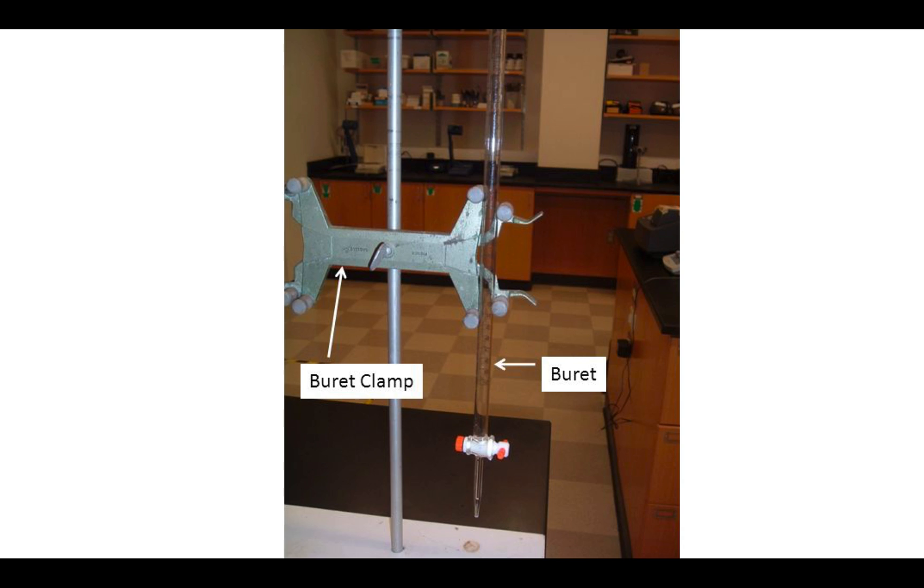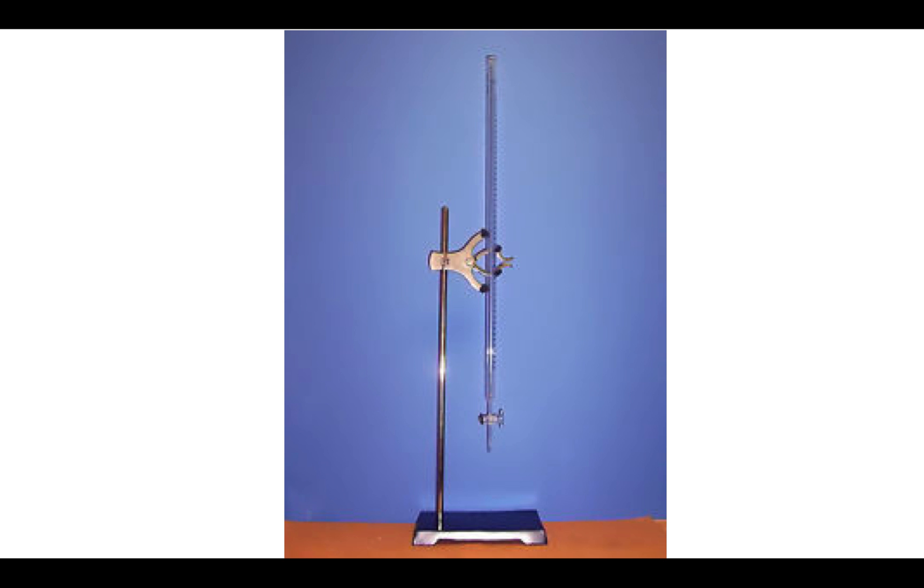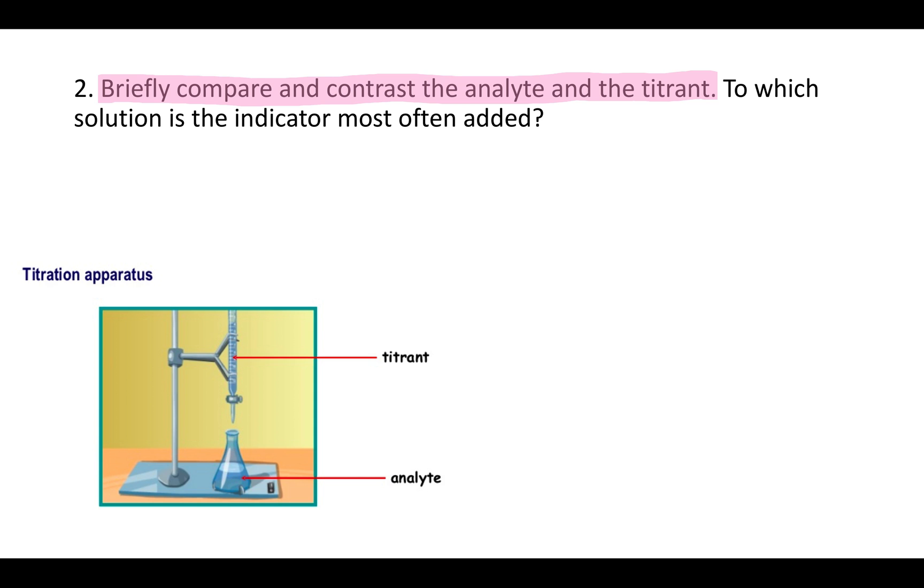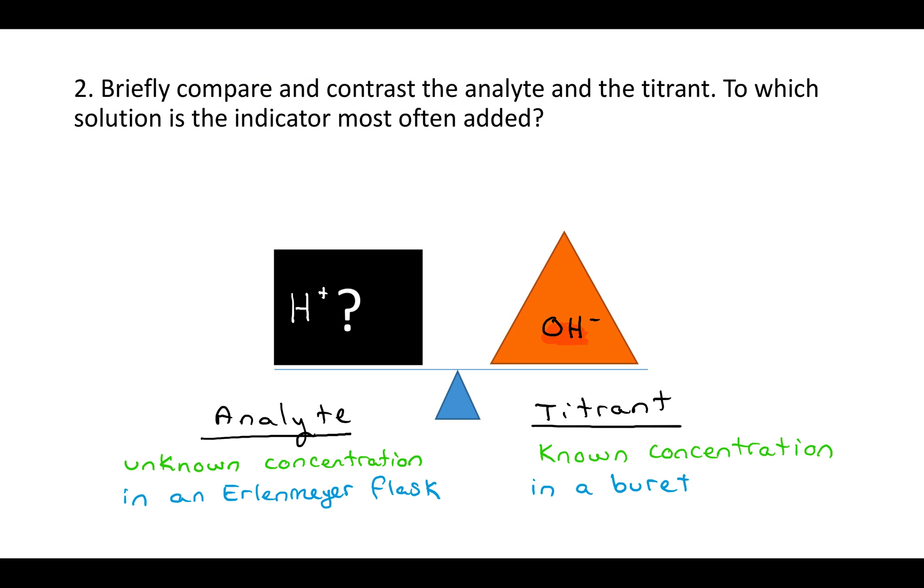You would keep this up with something called a burette clamp. Notice how it's going in between those two knobs. We'll use one of those in the lab. Here it is standing up. And so here you can see the titrant in the burette and the analyte in the Erlenmeyer flask. That's that difference.